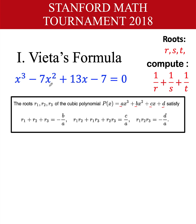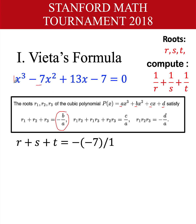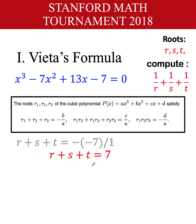For our polynomial, the three roots are r, s, and t. So r plus s plus t equals negative b over a, where b is negative 7 and a is positive 1. That becomes the negative of negative 7 over 1, which simplifies to r plus s plus t equals 7.